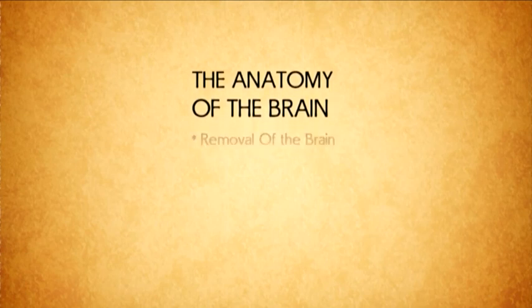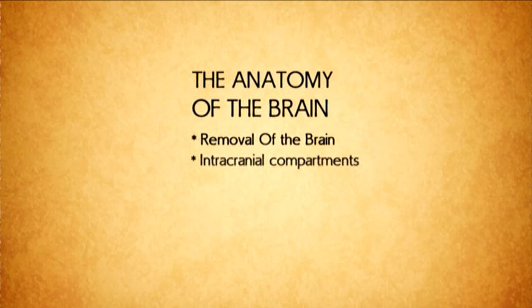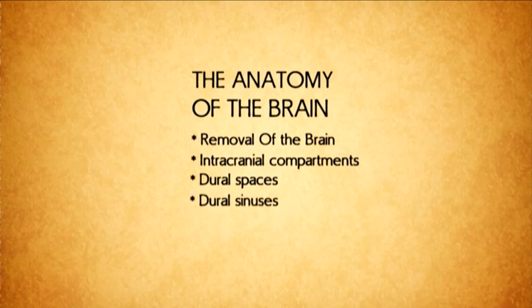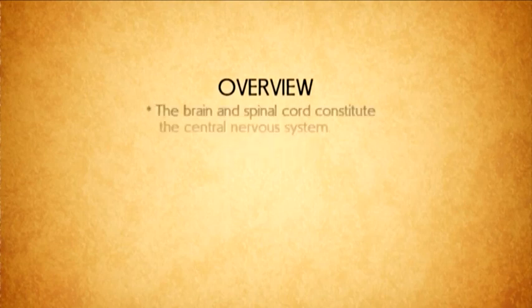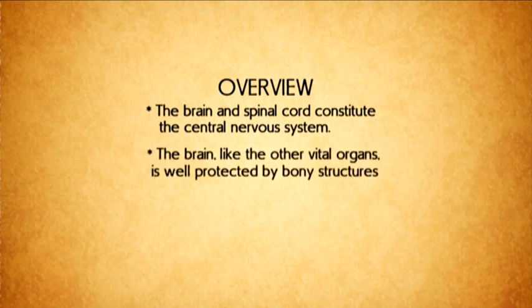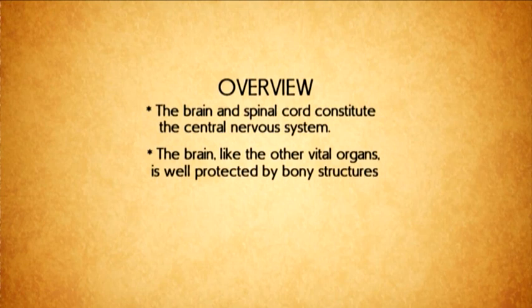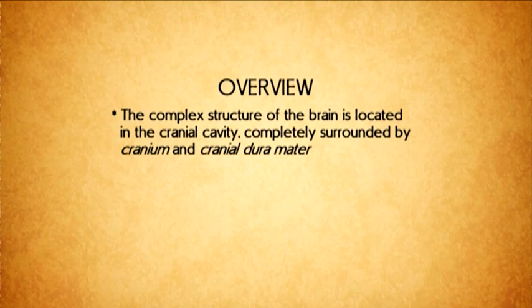First, we will consider the removal of the brain, involving lectures and demonstration. We will look at the intracranial compartment, the dural spaces, and finish up with the dural sinuses. It is important to note that the brain and the spinal cord constitute the central nervous system. The brain is an important vital organ of the body and, like other vital organs, it is well protected by bony structures. The complex structure of the brain is located in the cranial cavity, completely surrounded by the cranium and cranial dural matter. Therefore, it requires knowledge and care in order to remove the brain.